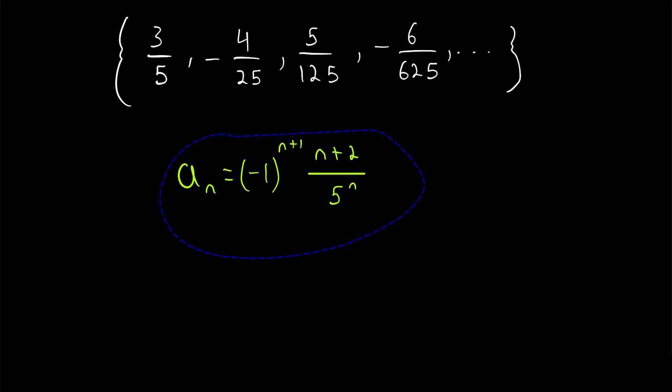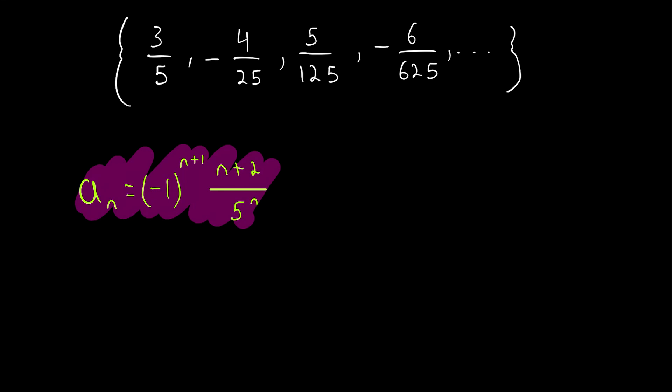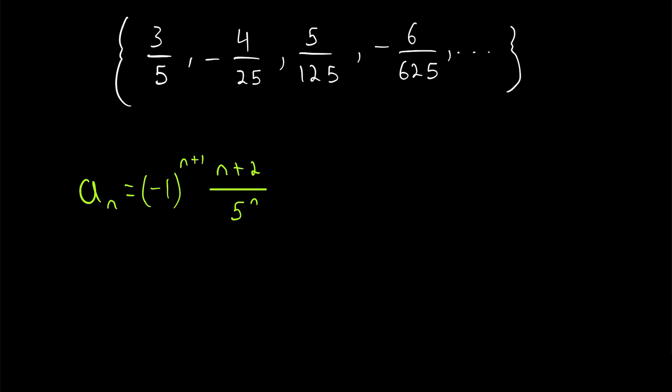And there it is. That is our expression for the nth term of this sequence. So, we could describe the sequence like this, or we could just use this instead, which frankly is more useful. Let's just take our expression for spin and plug in n equals 3. The third term of the sequence, according to our expression, is negative 1 to the power of 3 plus 1 multiplied by 3 plus 2 divided by 5 to the power of 3. Negative 1 to the power of 3 plus 1 is negative 1 to the power of 4, which is just 1. Then, 3 plus 2 is 5, 5 to the power of 3 is 125, and there we go. That is the third term of our sequence, and we see that it is correct.